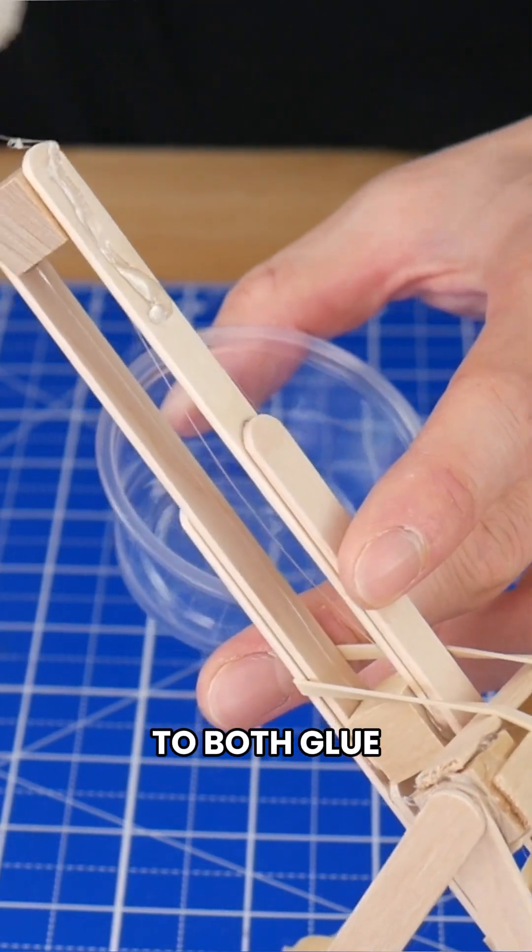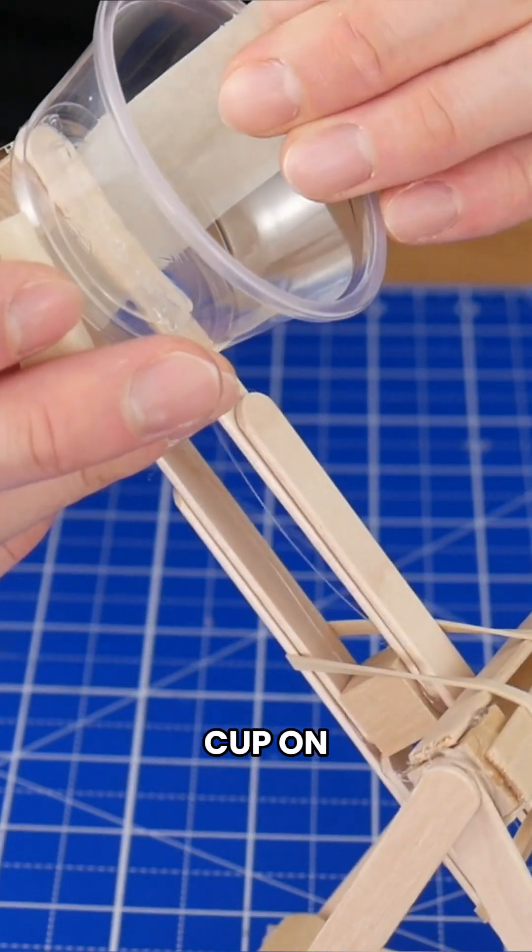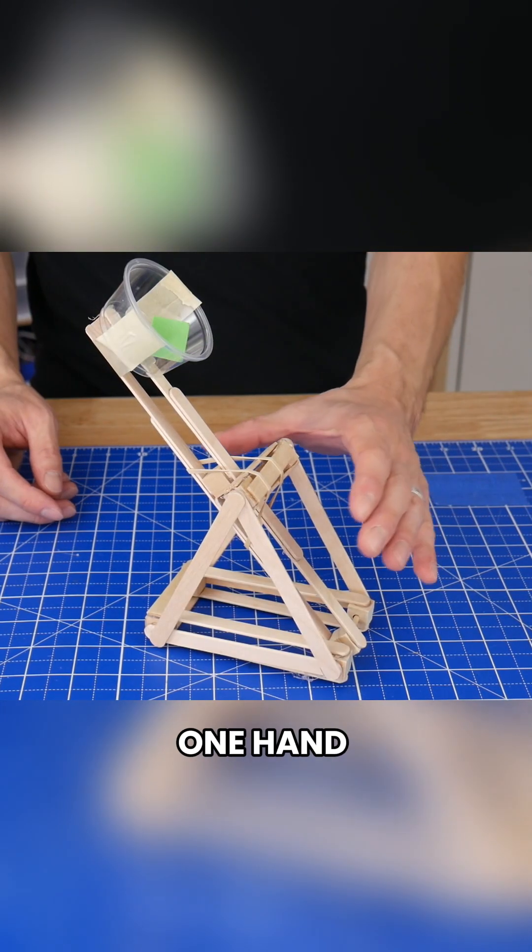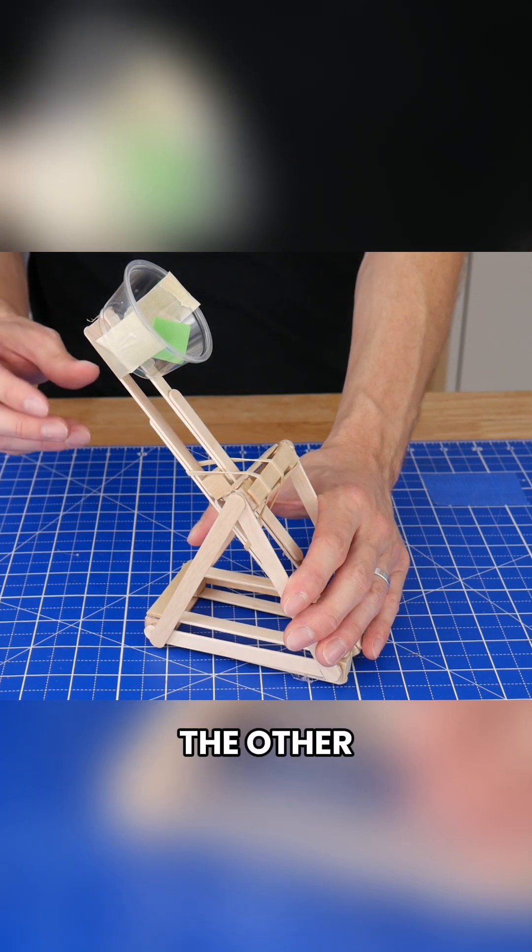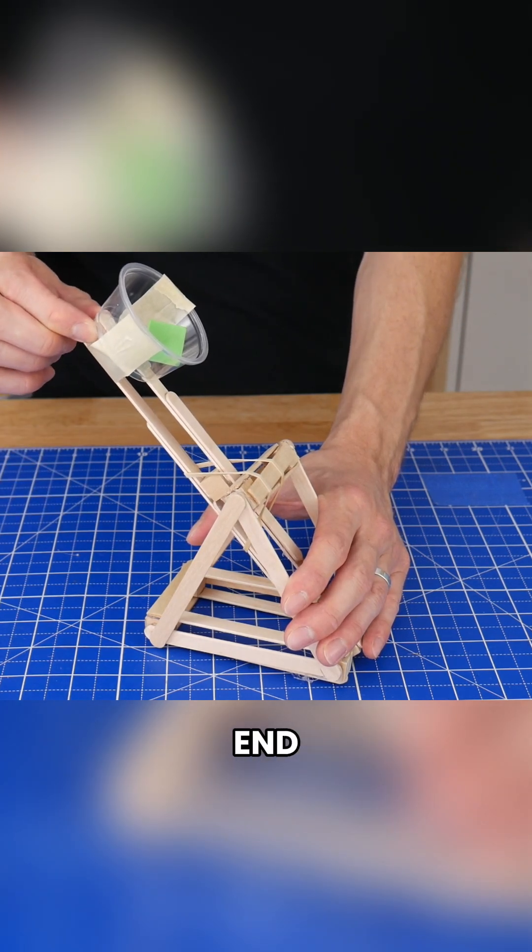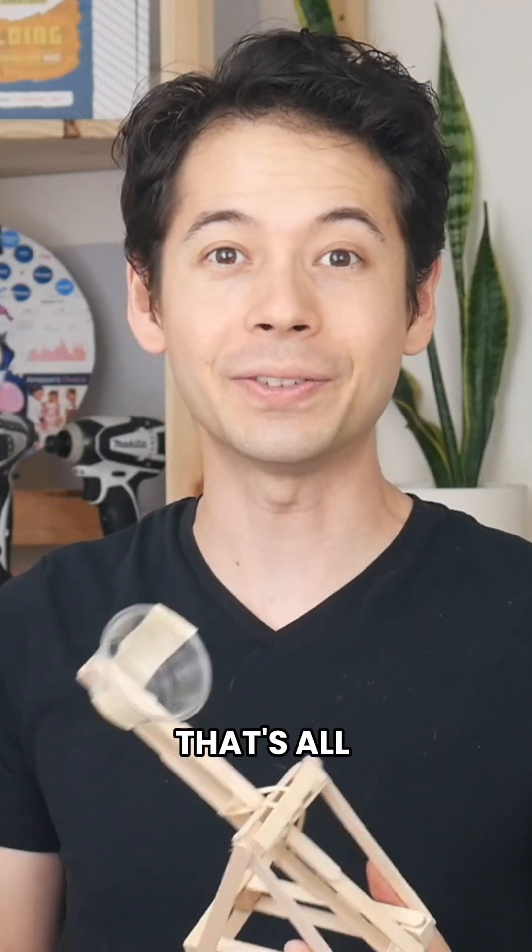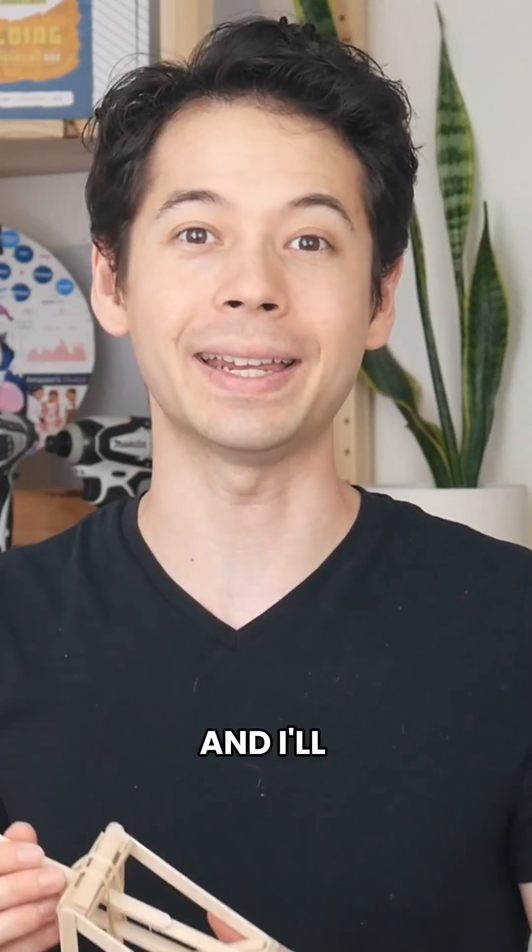The last step is to glue and tape a plastic cup on. To launch the catapult, load your projectile of choice, then use one hand to hold down the base while the other hand grabs the cube at the very end of the catapult arm. Pull all the way back and then just let go. That's all for this video. Thanks so much for watching, and I'll see you next time.